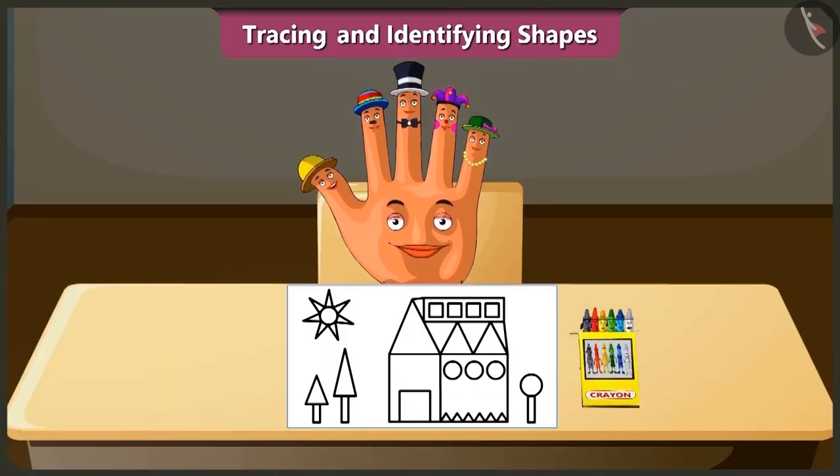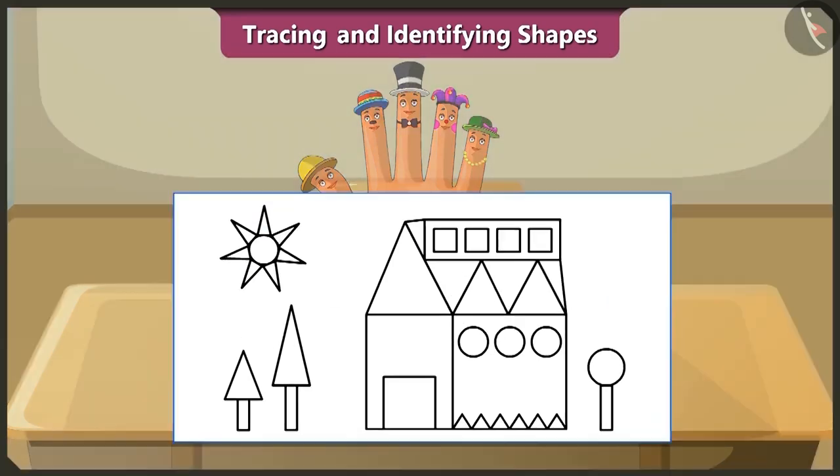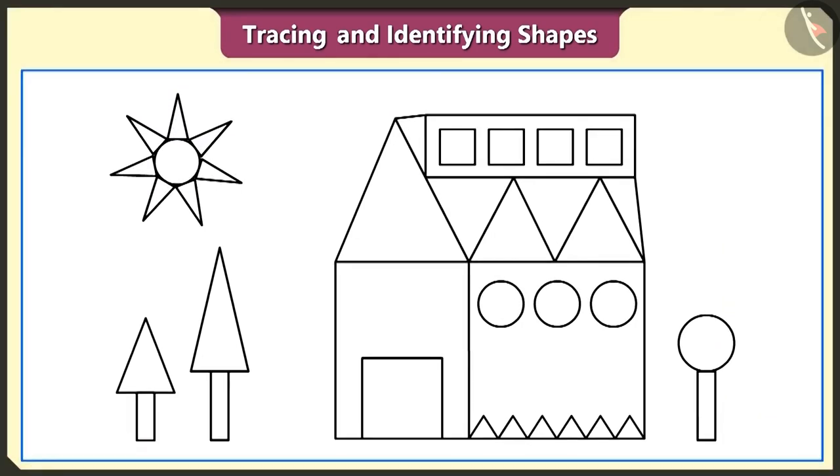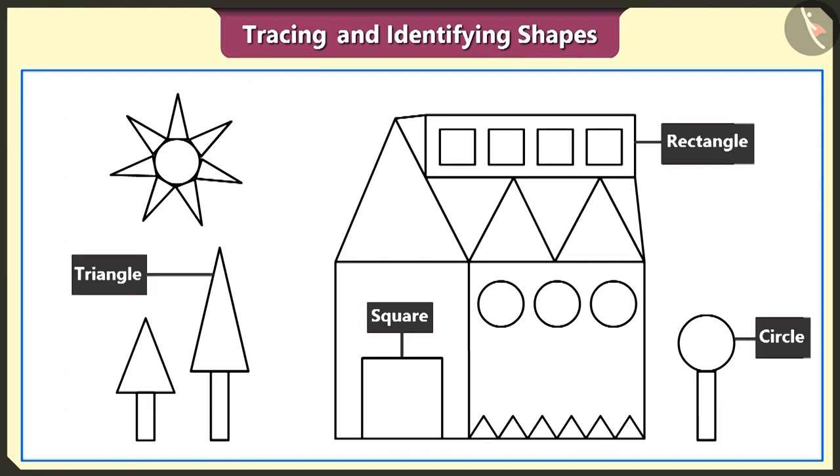Friends, let's see the second example now. Look, this is a figure made by tracing square, rectangle, circle and triangle shapes.